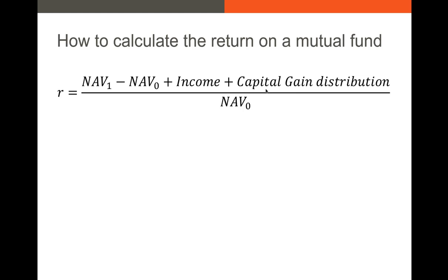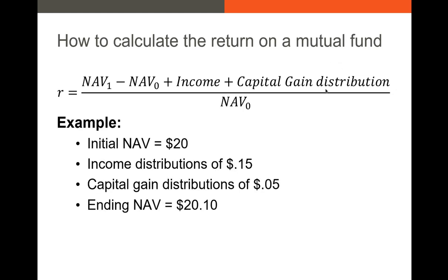I should point out this is the calculation for open-end mutual funds only. So let's take a quick example. Your initial NAV is $20. You receive $0.15 in dividend distributions per share. Your capital gains distributions are, let's say, 5%, and then your NAV at the end is $20.10. What is your return on this mutual fund investment?